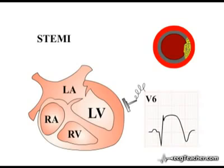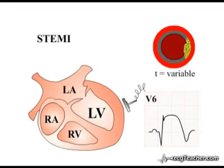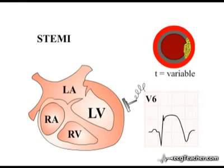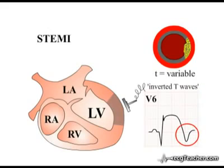Tall symmetrical peaked T waves are an early ECG finding in STEMI. As the process of infarction evolves, the T waves may demonstrate a further abnormality developing at a variable time point after occlusion. T waves are generally concordant with the QRS complex, so that in a lead with a dominant R wave such as V6, the T waves are normally upright. However, in a lead looking directly at an acute MI, the T waves may flip and become inverted. The timing of this phenomenon is highly variable.